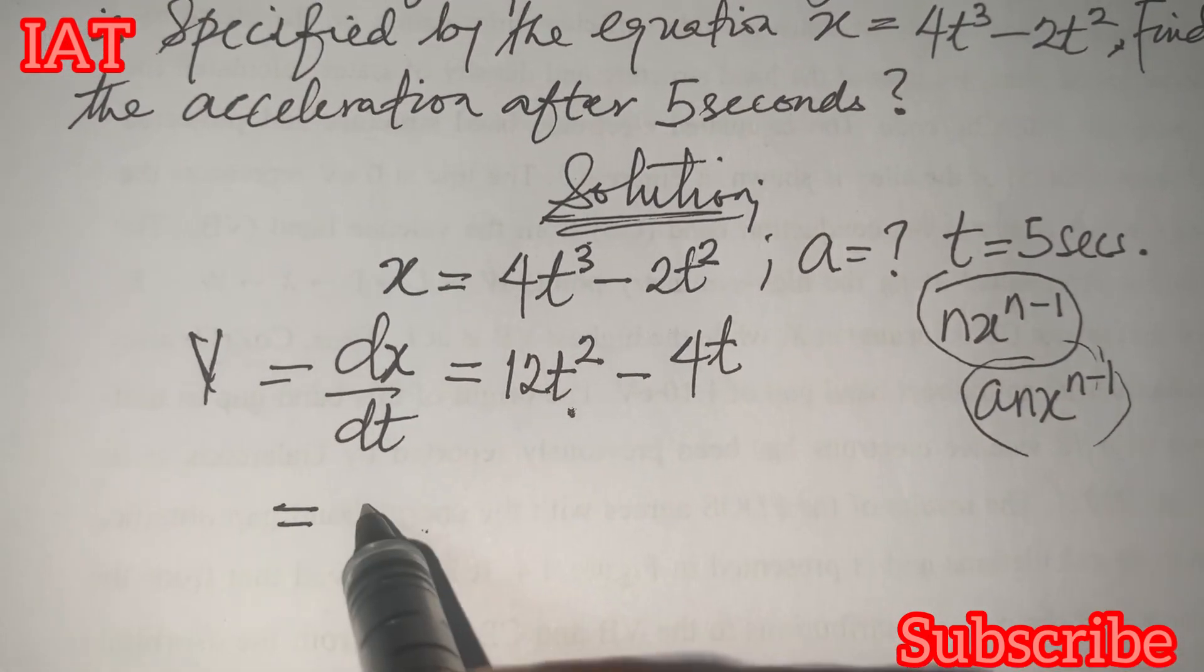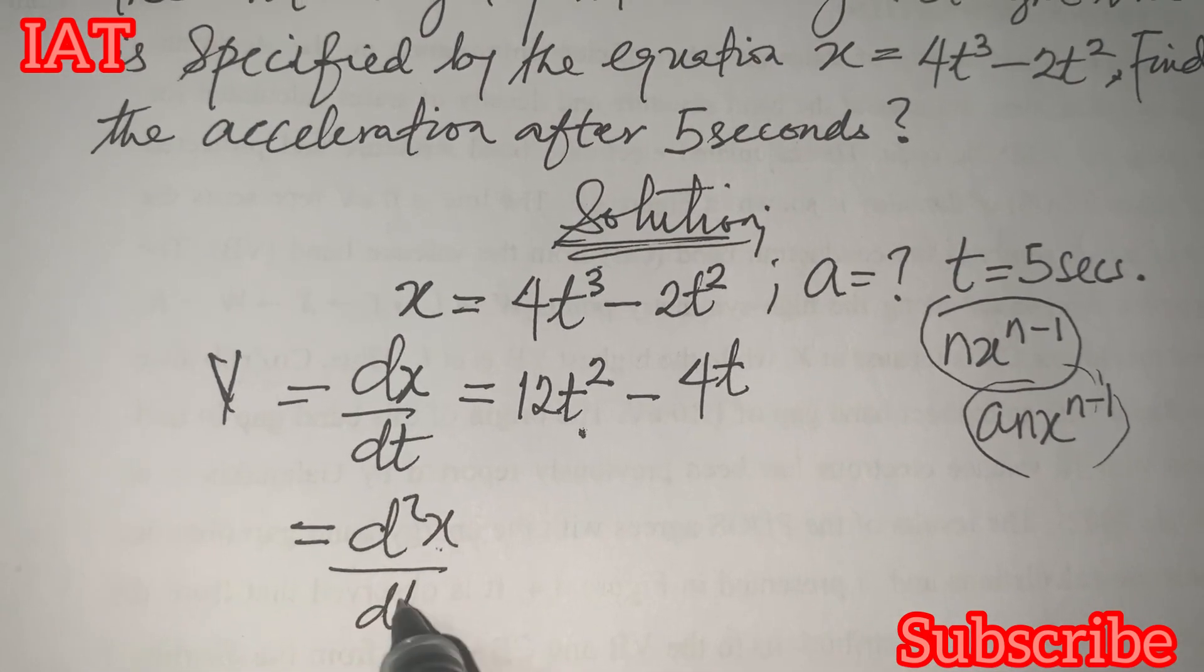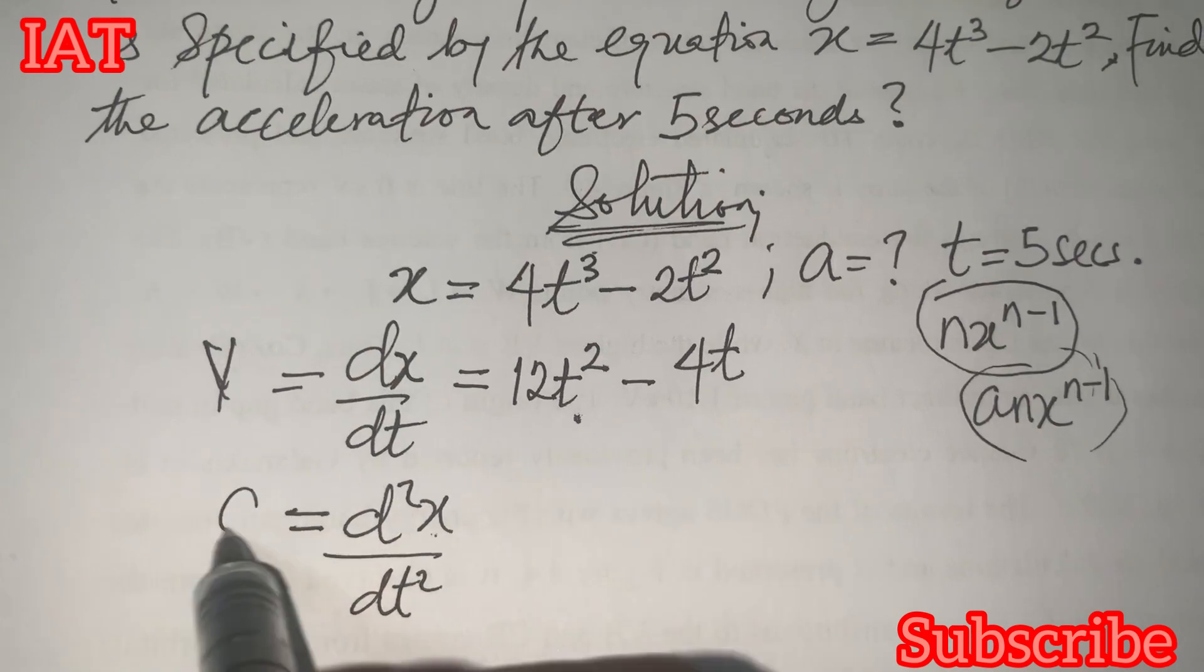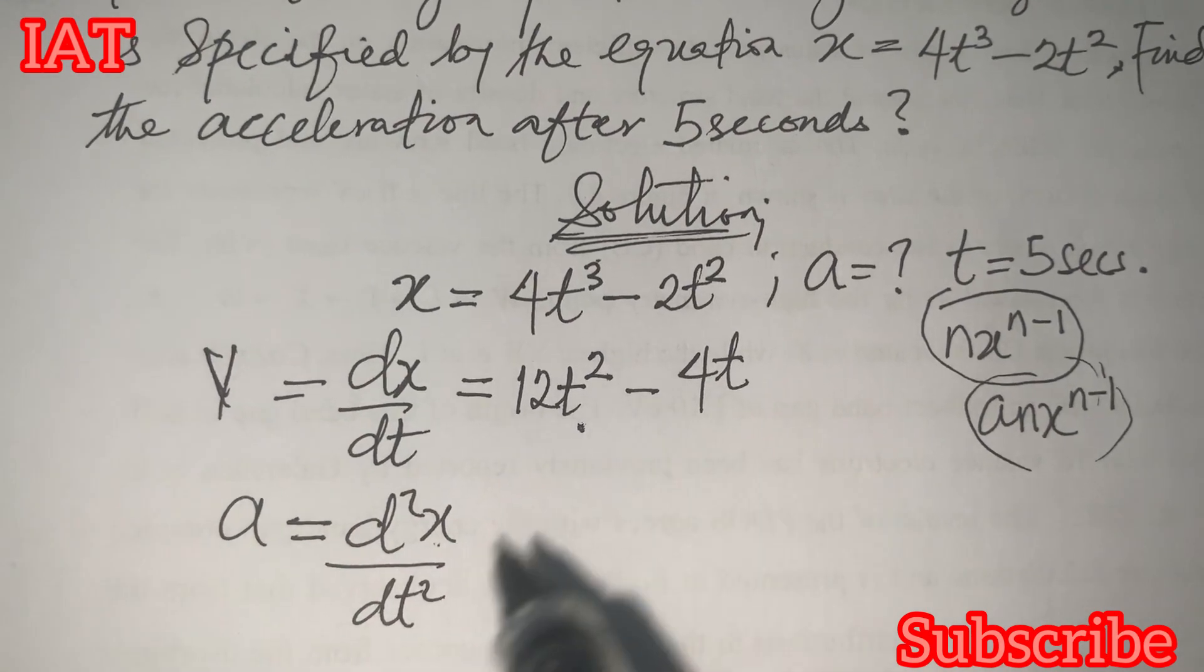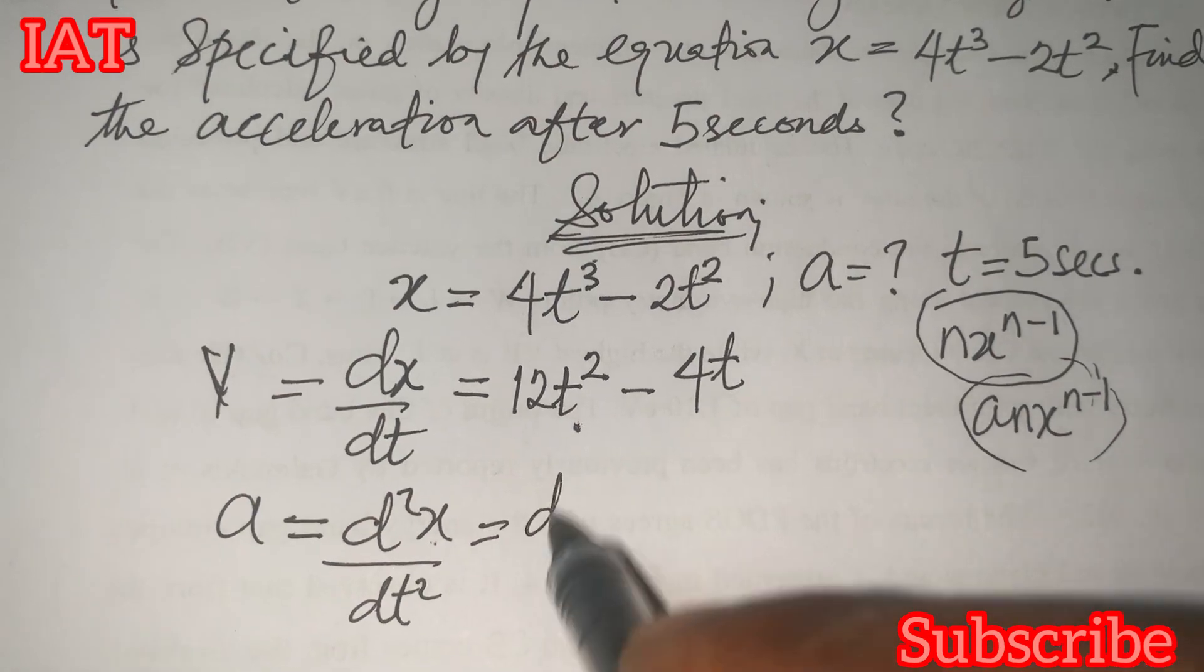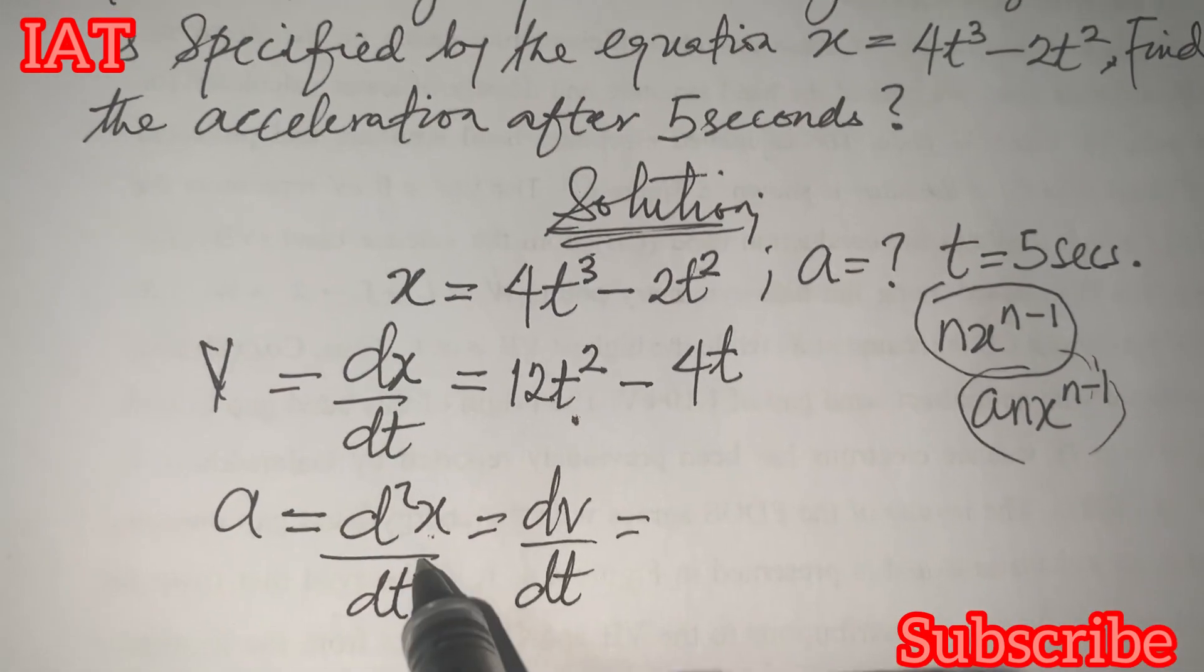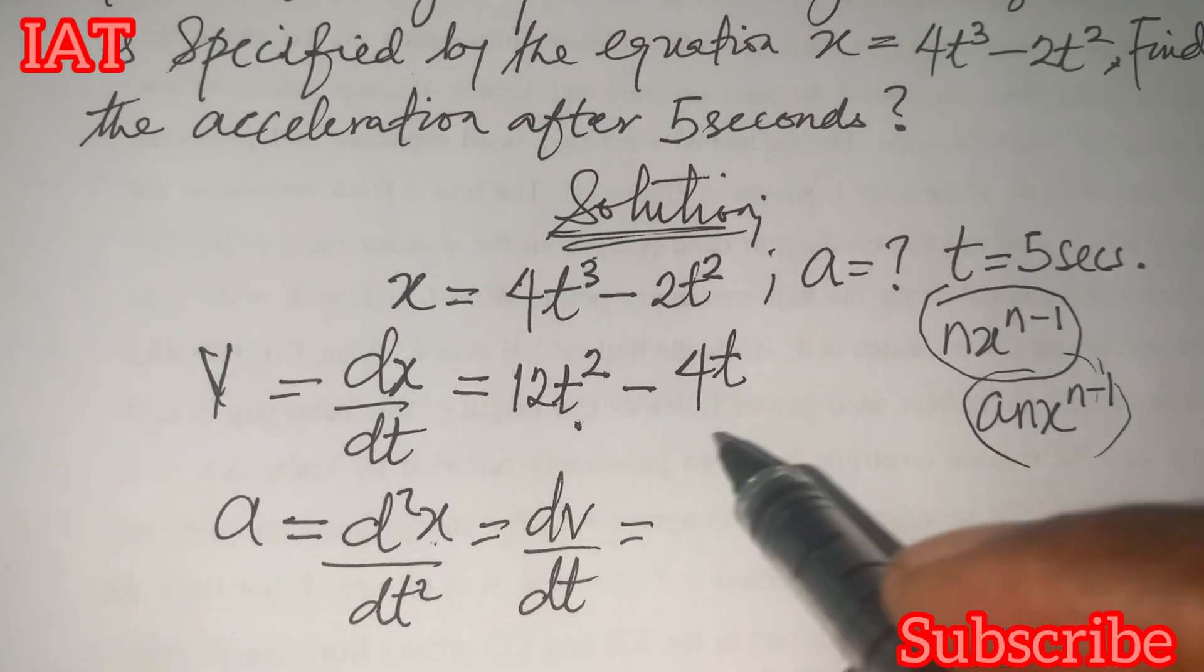If you want to take the second derivative of this, you have d²x over dt², and this is for acceleration. Alternatively, it is the same thing as saying taking the derivative of the velocity with respect to time. It is the same thing with this, and that is for acceleration.